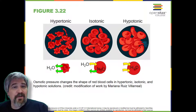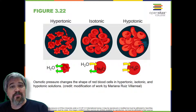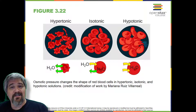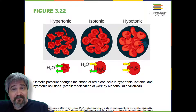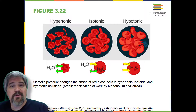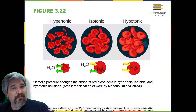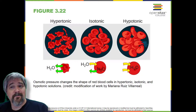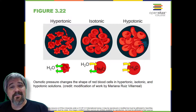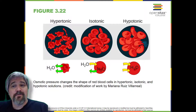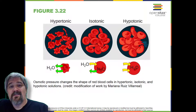In a hypotonic solution, such as tap water, the extracellular fluid has a lower concentration of solutes than the fluid inside the cell, and water enters the cell. In living systems, the point of reference is always the cytoplasm. The prefix hypo means the extracellular fluid has a lower concentration of solutes, or lower osmolarity, than the cell's cytoplasm, and a higher concentration of water than the cell. In this situation, water will follow its concentration gradient and enter the cell. This may cause an animal cell to burst or lyse.